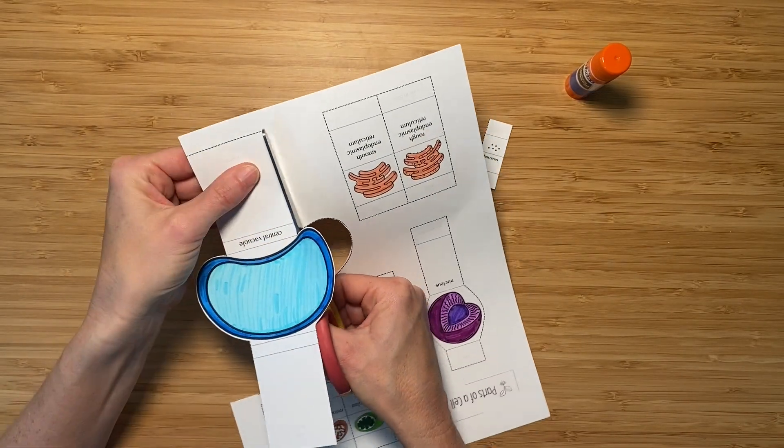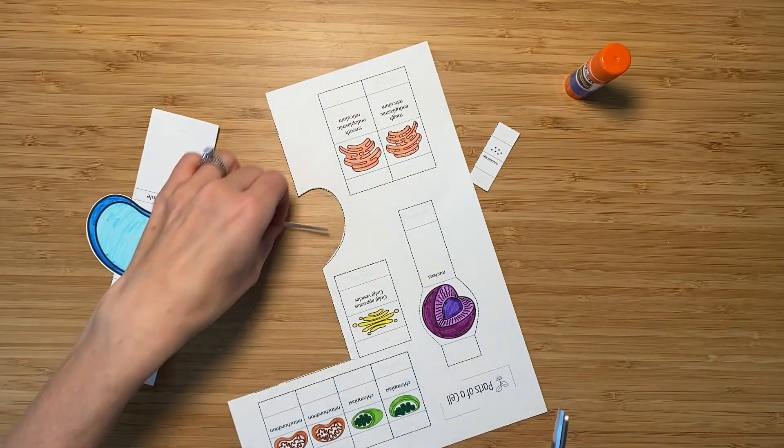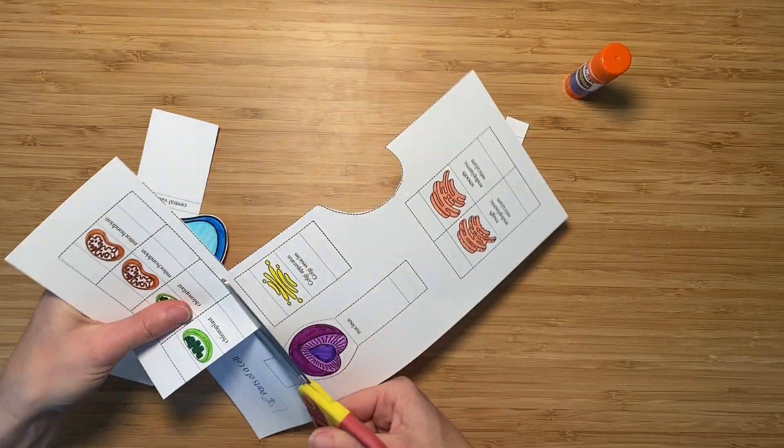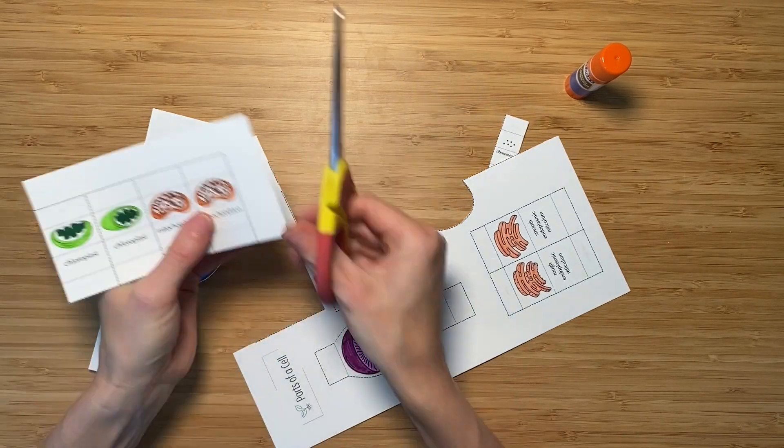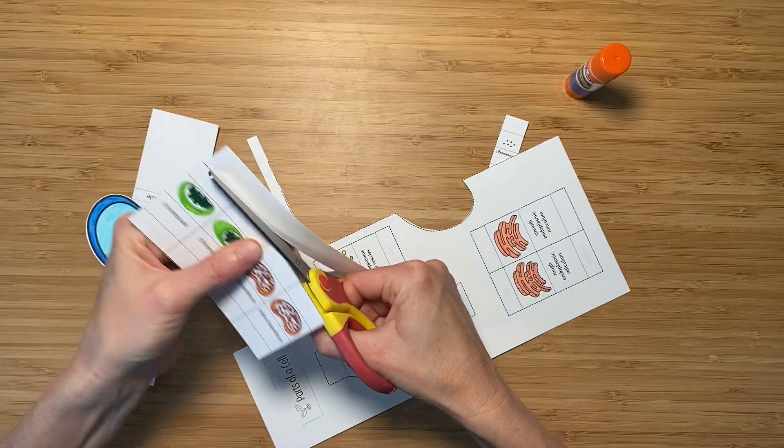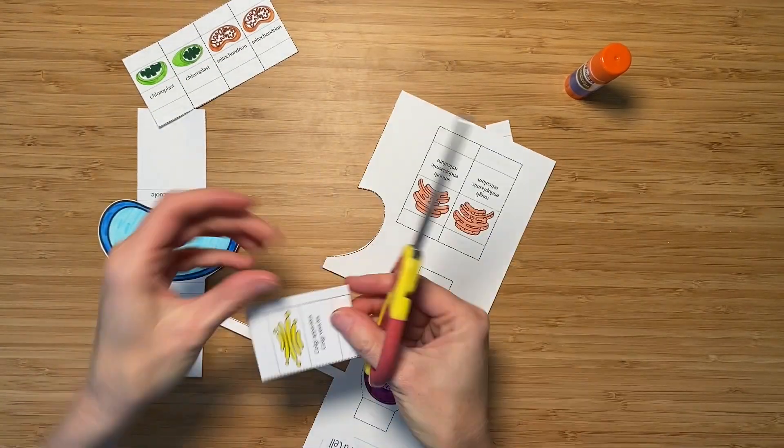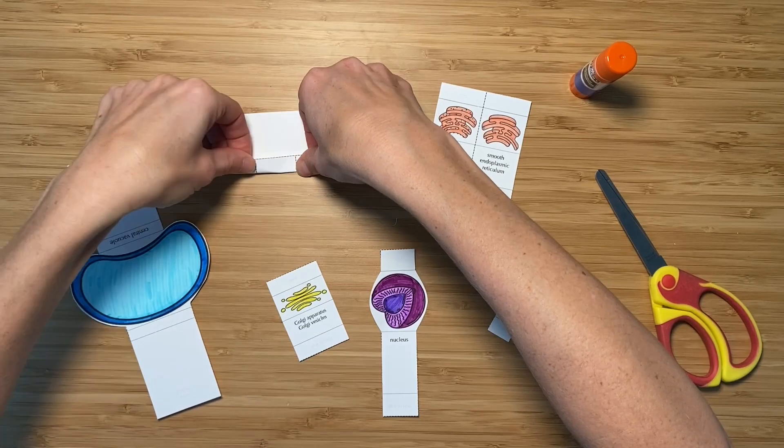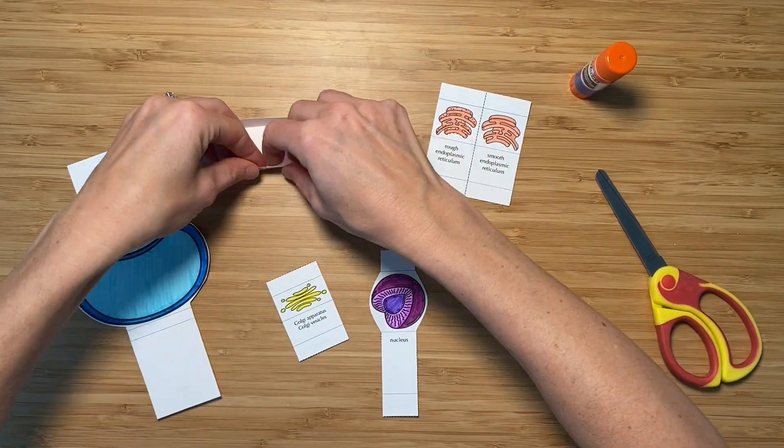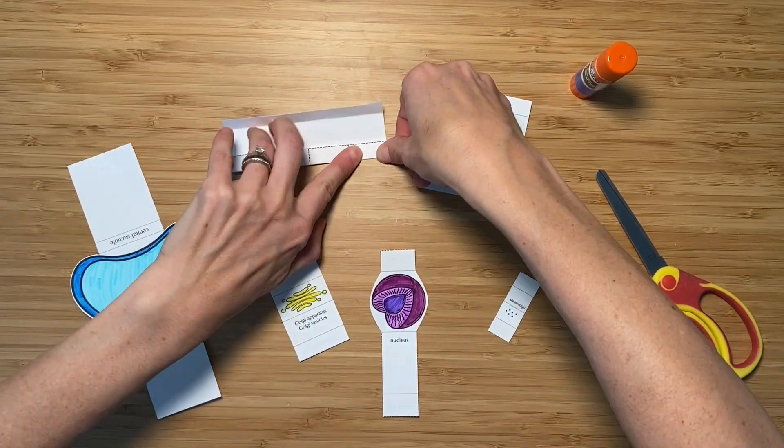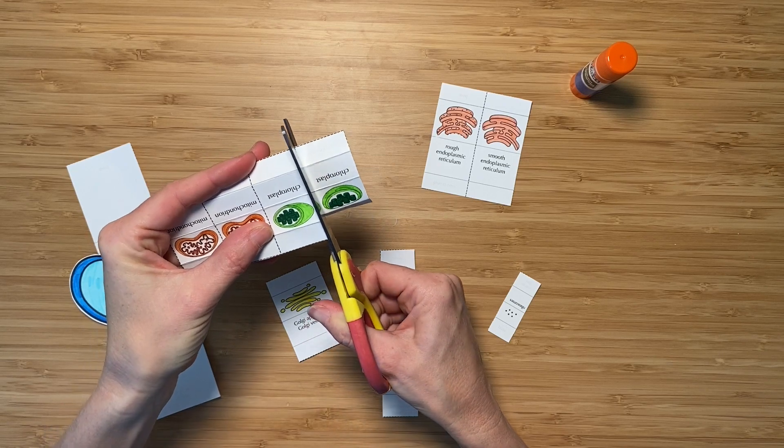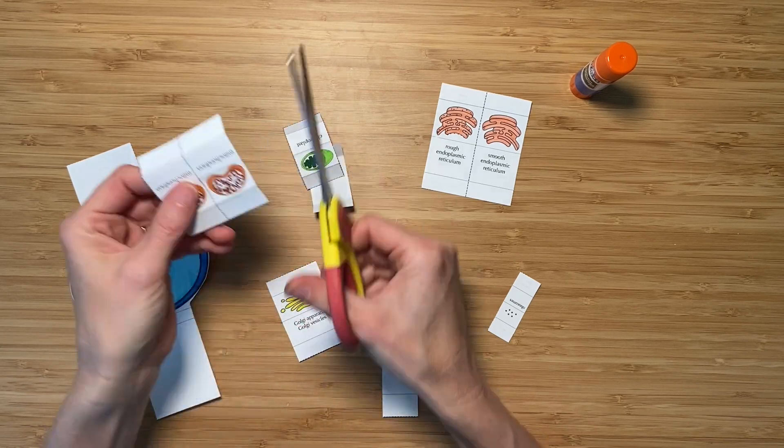Cut out the parts of the cell by cutting on the black dashed lines. When you get to the items that are hooked together in their pictures, go ahead and just cut on the outside. We'll fold them first and then cut them apart. Fold backward on each of the gray dotted lines. When you finish folding the items that are joined together, you can go ahead and cut them apart.